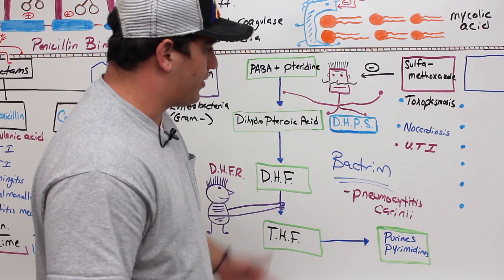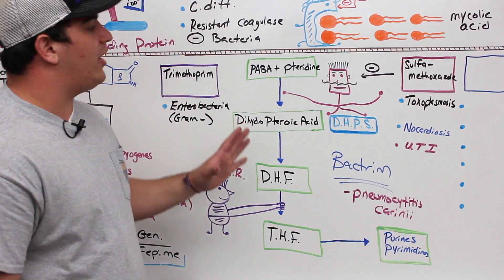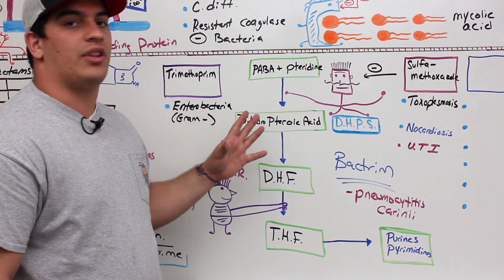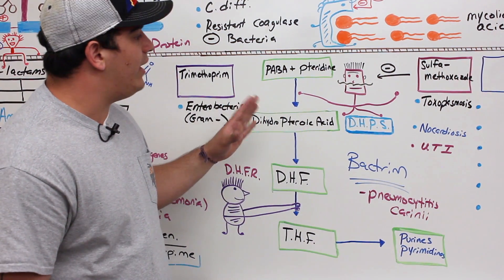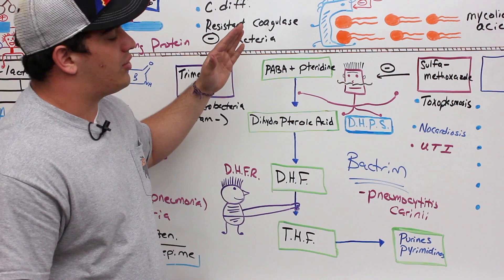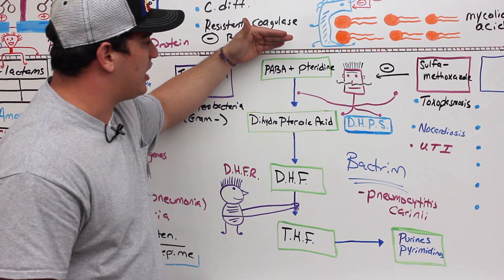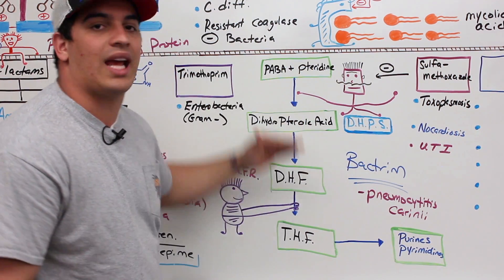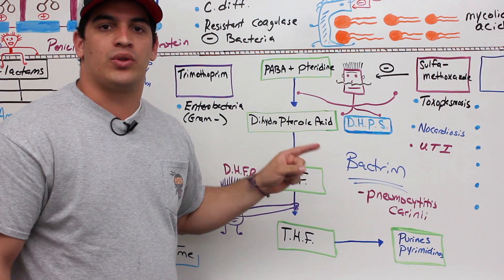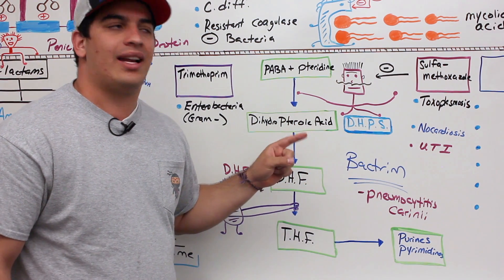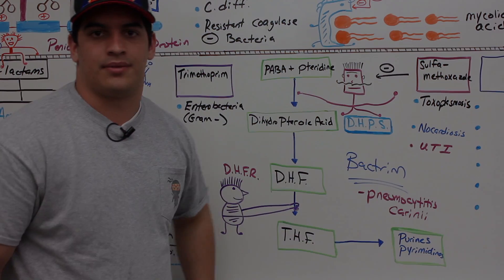Alright Ninja Nerds, in this video we covered the specific types of antibiotics targeting the folic acid pathway to treat bacterial infections. In the next video, we'll talk about antibiotics specifically targeting protein synthesis.